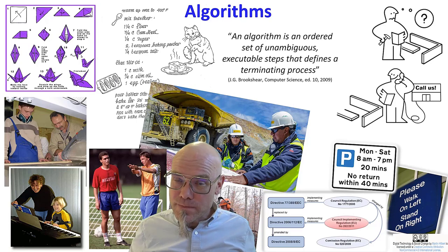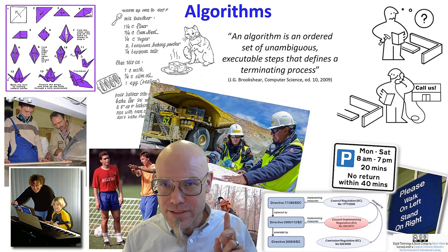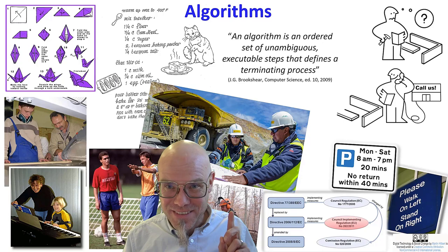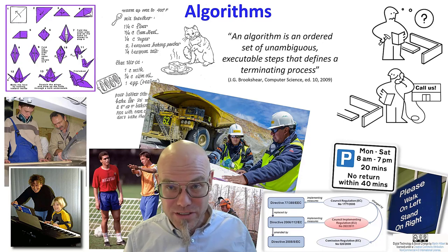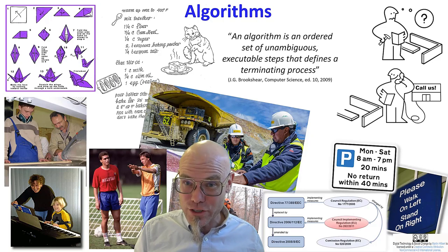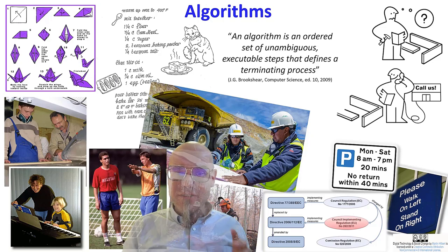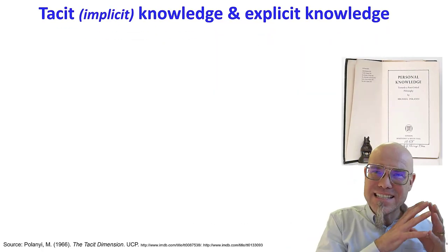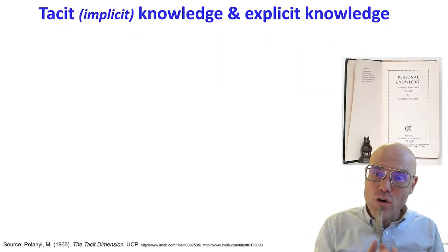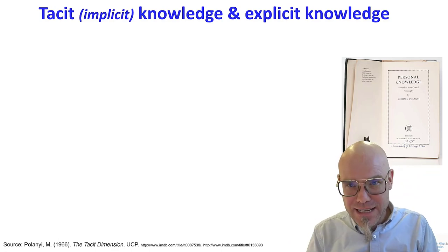Not everything that we do is explicit. Not everything that machines do is explicit. Some of these modern neural networks — the transformer networks — we have no idea what they're doing or how they're doing it. And that's a very important distinction. We have algorithms or knowledge that are tacit, implicit, or that can be explicit. That goes back to the 1950s.